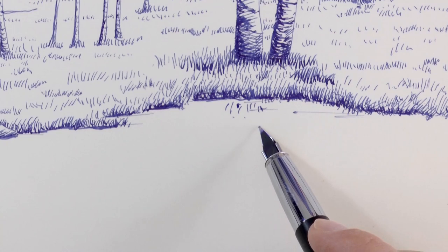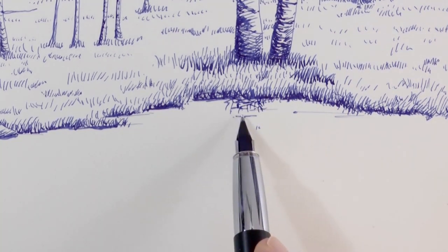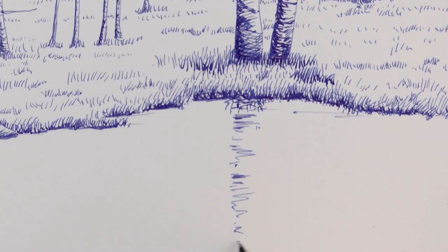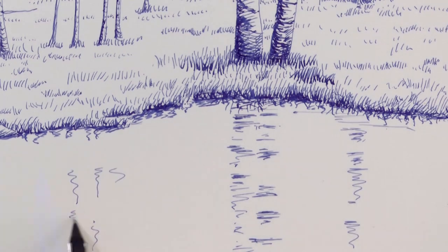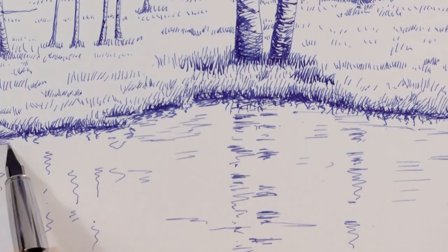Now the reflection of the water. This is one of my favorite parts. We have the shadow of the grass and its reflection on the water, and also the reflection of the trees, of course. I do this with curly lines.